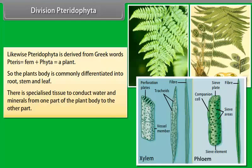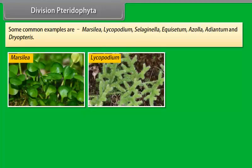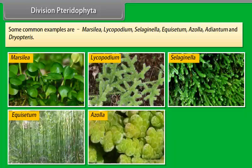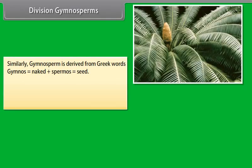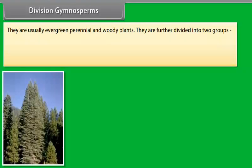Division Bryophyta. Bryophyta is derived from the Greek words Bryon, which means moss or liverwort, plus Phyta, which means a plant. The plant's body is commonly differentiated to form stem and leaf-like structures. The plants in this group are also known as amphibians of the plant kingdom. There are no specialized tissues to conduct water and minerals. Some common examples are Funaria, Marchantia, Riccia, and Anthoceros.